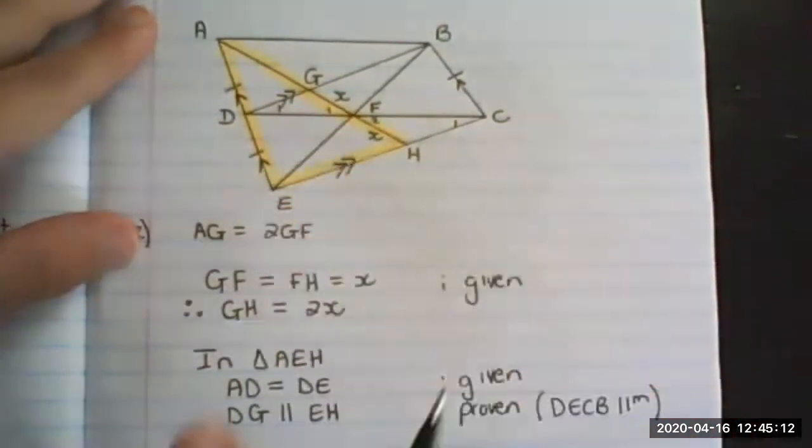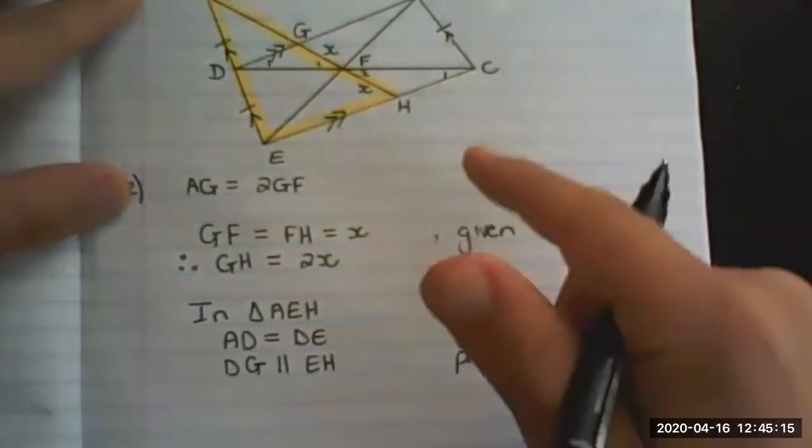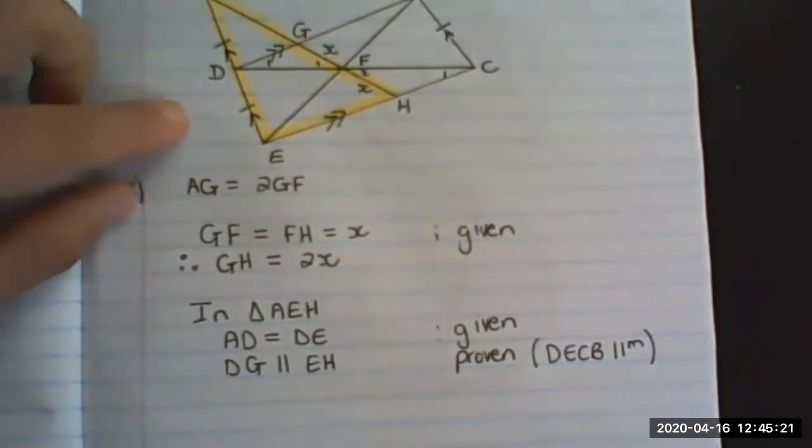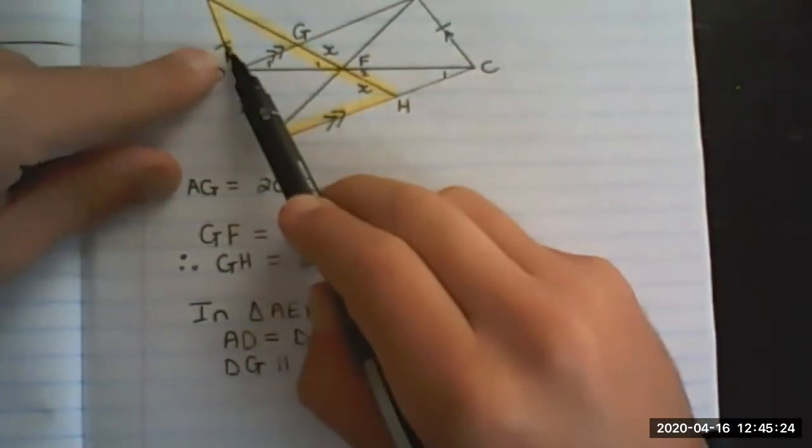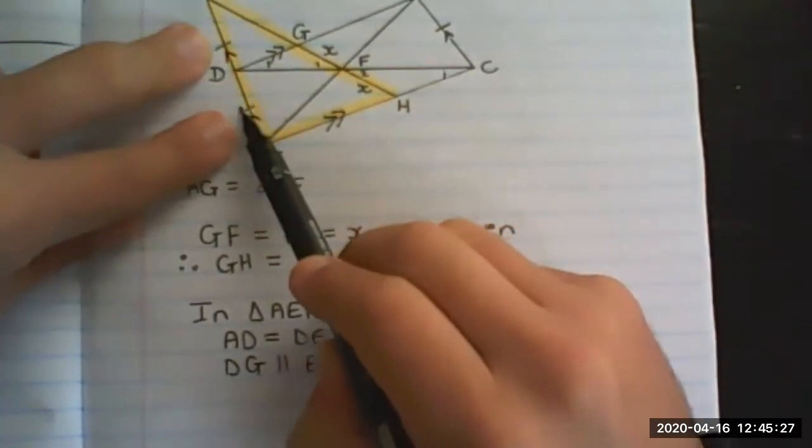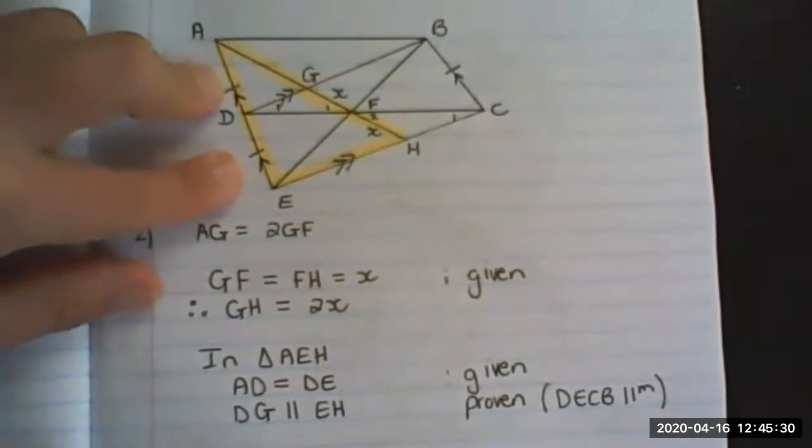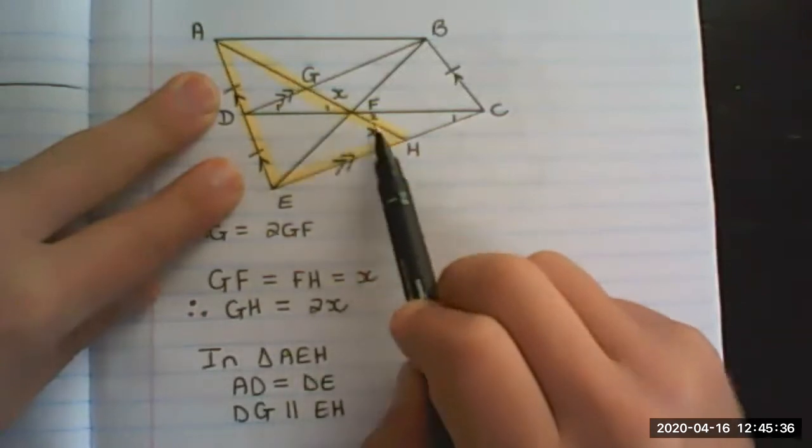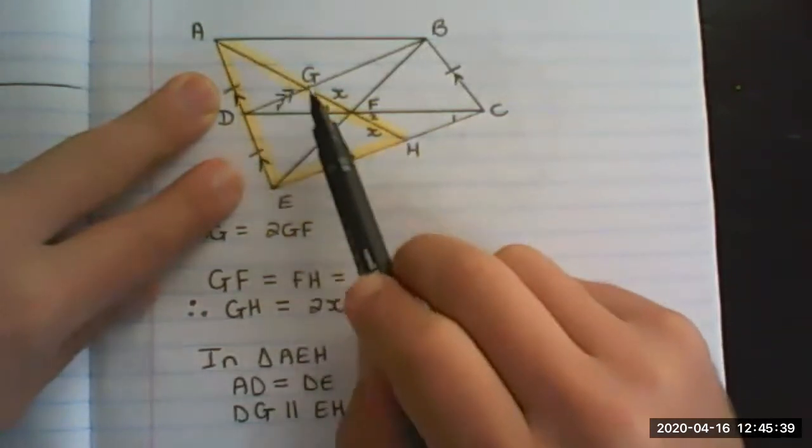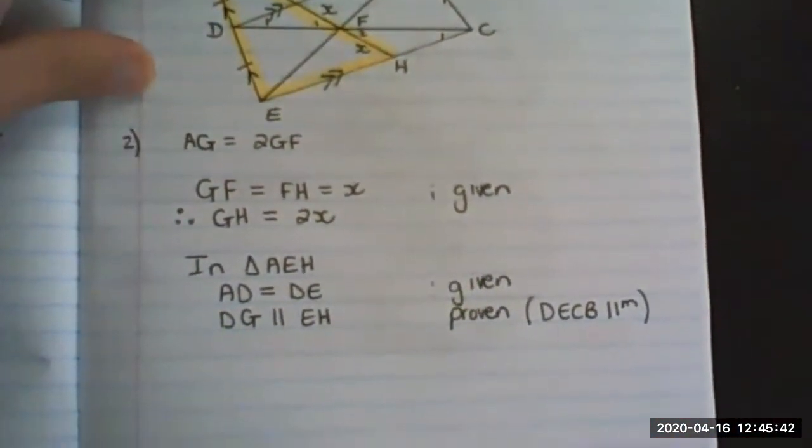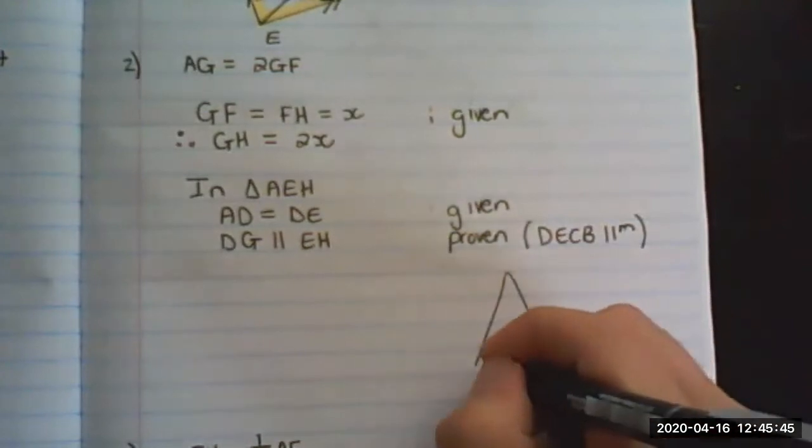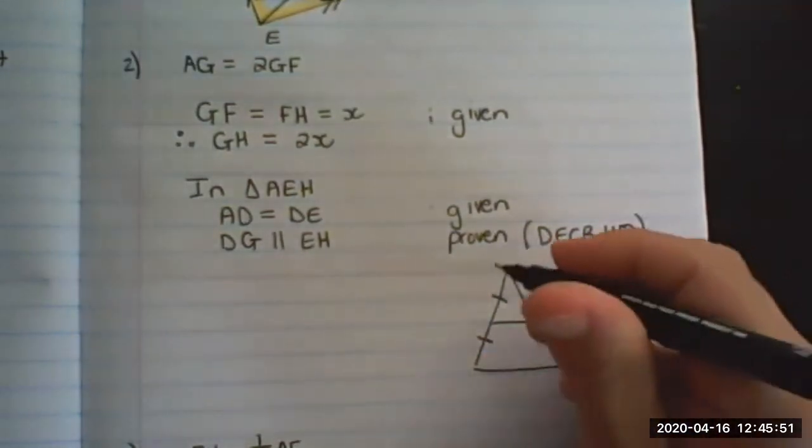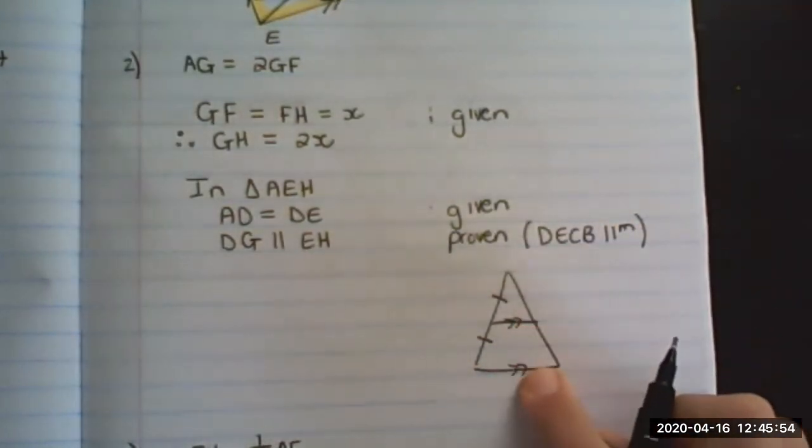What we proved in the previous question we are using now. Even though we use that information, you need to write it down even though it's a property of the diagram. Now we can continue because these two lines are equal and these are parallel to each other. Therefore, line AG is equal to line GH because of the midpoint theorem. Remember in the midpoint theorem, if I have a triangle like this, if I put two sides equal or two lines equal and a pair of lines parallel to each other,